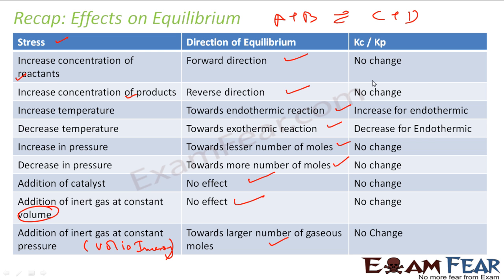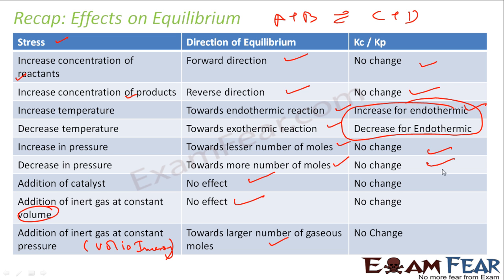Now let's talk about how Kp and Kc change. Increasing or decreasing concentration — no change in Kp or Kc. Increase temperature — Kp and Kc will change. Please note: Kp and Kc will have a change only when you change temperature. Increase pressure, decrease pressure, add catalyst, add inert gas — the Kp and Kc values will not change. Kp and Kc values change only when you play with temperature.